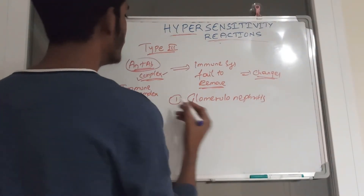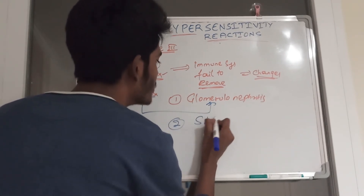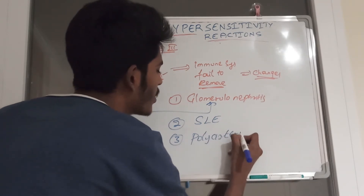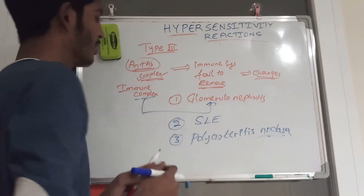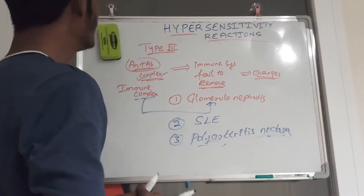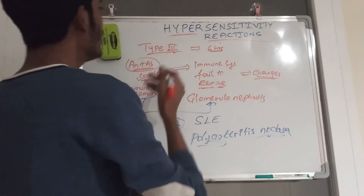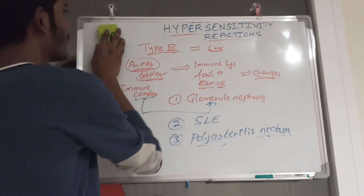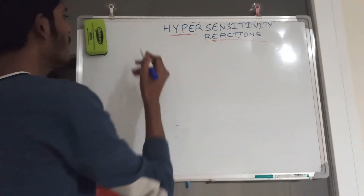An example is glomerulonephritis, where complexes accumulate in the kidney. Other examples include systemic lupus erythematosus and polyarteritis nodosa, where immune complexes accumulate in the vessels, leading to changes in the body. This reaction starts approximately six hours after complex formation — once the immune system fails to remove the complex, accumulation begins, and it takes at least six hours. This completes the immediate-type hypersensitive reactions.